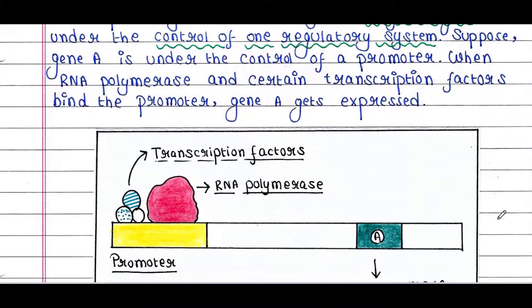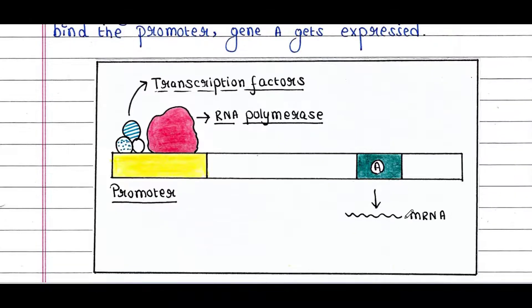Suppose gene A is under the control of a promoter. When RNA polymerase and certain transcription factors bind this promoter, gene A gets expressed.